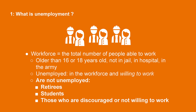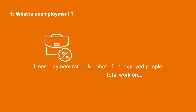This is important, as there are people who are in the workforce but who, for some reasons, do not want to work. Not considered as unemployed are retirees, students, and those simply discouraged and not willing to work. The non-inclusion of discouraged workers in the unemployed can lead to an issue of underreporting of unemployment. As a consequence, the unemployment rate equals the number of unemployed people divided by the total workforce. For instance, in the US, the unemployment rate was 5.3% at the end of 2021.